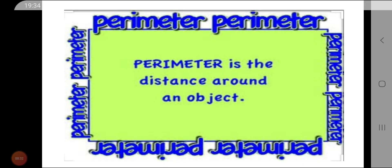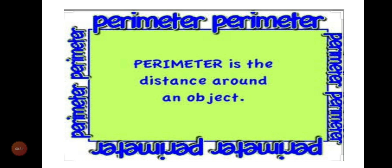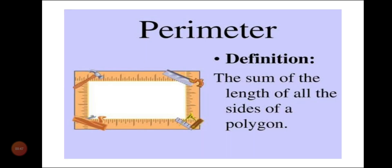What do you mean by perimeter? Perimeter is the distance around an object — the total length or the total boundary of any object. Or we can say it is the sum of the length of all the sides of a polygon.